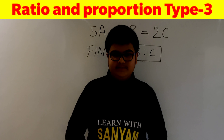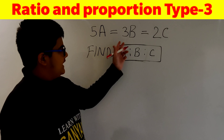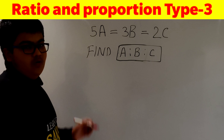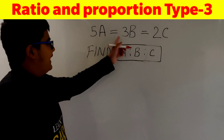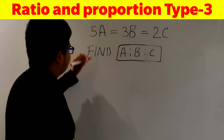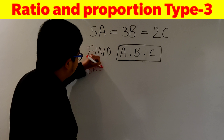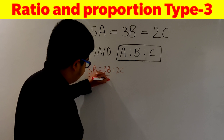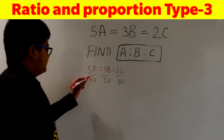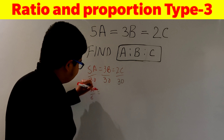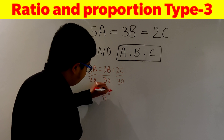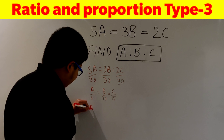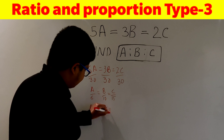Here is another question. This time we are given 5A = 3B = 2C, and we have to find A:B:C. We multiply all the coefficients: 5 × 3 × 2 = 30. Dividing all terms by 30 and simplifying gives us A/6 = B/10 = C/15. The ratio of the denominators is our answer, so A:B:C = 6:10:15.